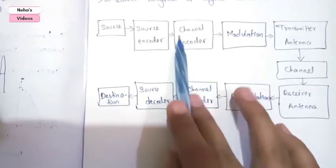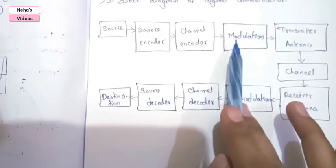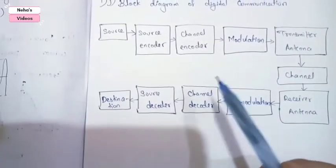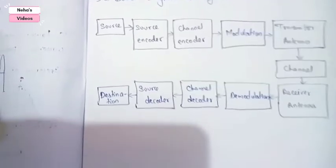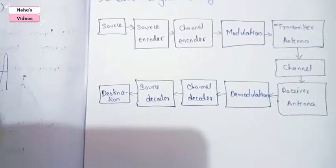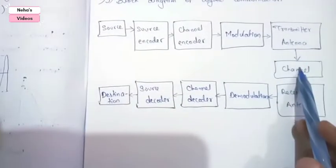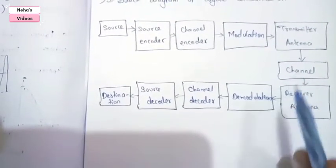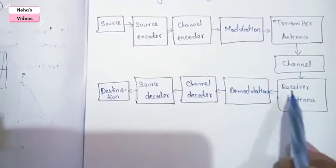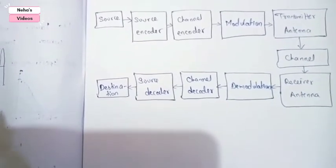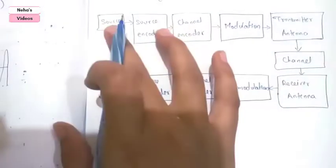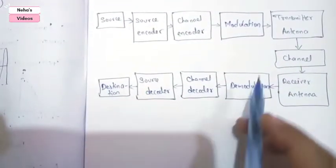Then a source encoder which will encode your voice, then the channel encoder, then modulation - modulation means converting the carrier signal's frequency, phase, or amplitude with respect to the message signal. This is the transmitter antenna, and this will go through a channel which may be wired or wireless, then to the receiver antenna.